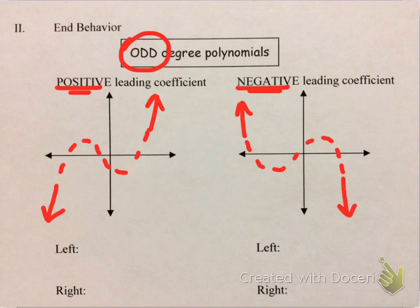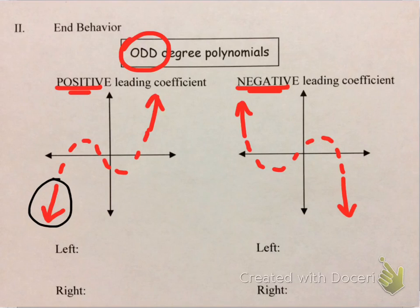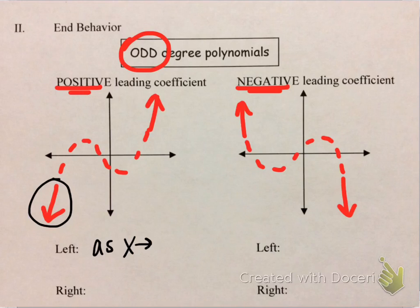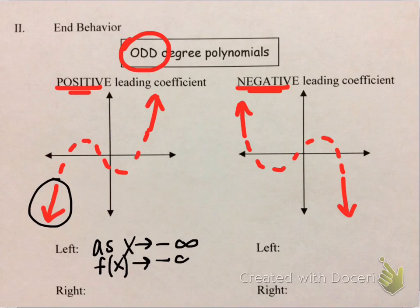For the left behavior, we're looking at the left side of the graph. Instead of just writing the word 'falls,' let's use the more advanced arrow notation. The left behavior says: as x goes to negative infinity, the y values are also decreasing, so they're going to negative infinity as well. That would be the left behavior of our graph.